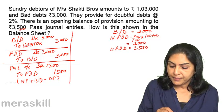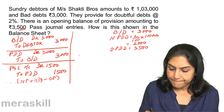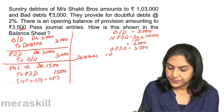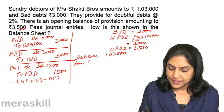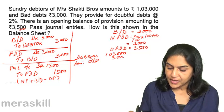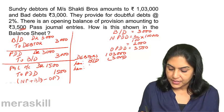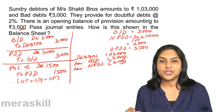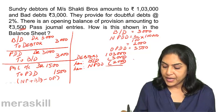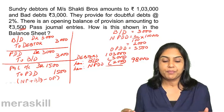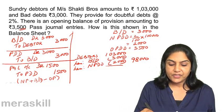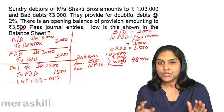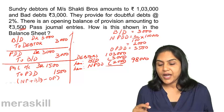In the balance sheet: Debtors 1,03,000, less bad debts 3,000, less new provision for doubtful debts 2,000 (the closing balance in the provision account), giving a net balance of 98,000. We set off the bad debts against the old provision and created a new provision to the extent required. The ultimate balance in the provision account at the end of the year had to be 2,000.